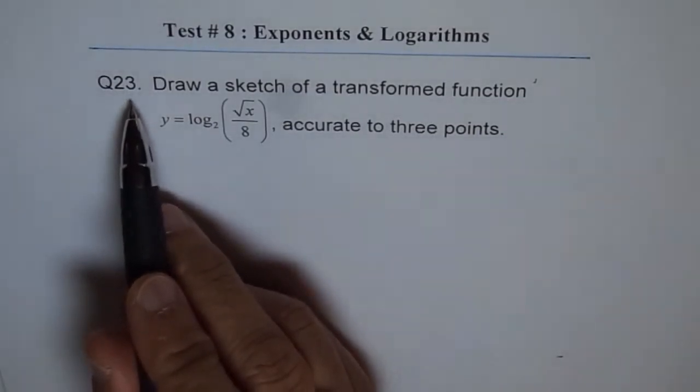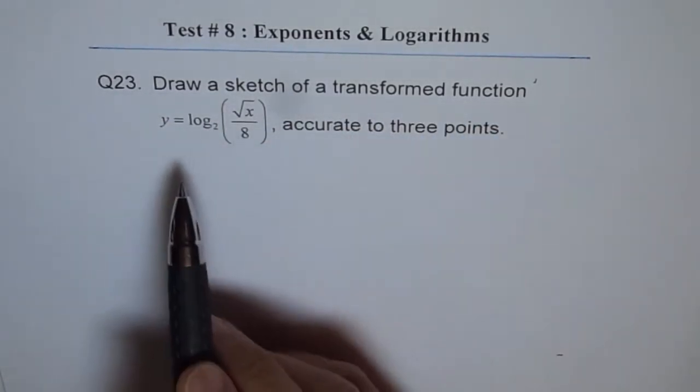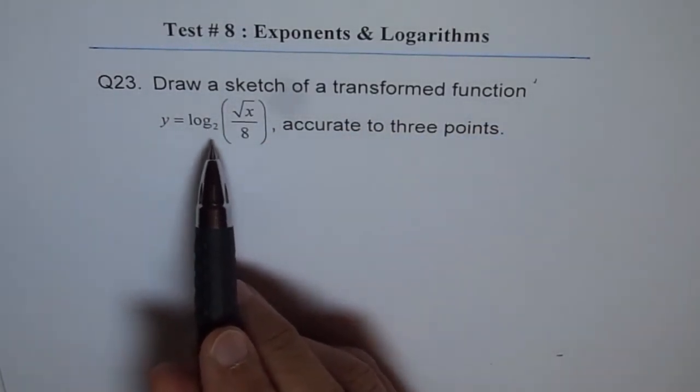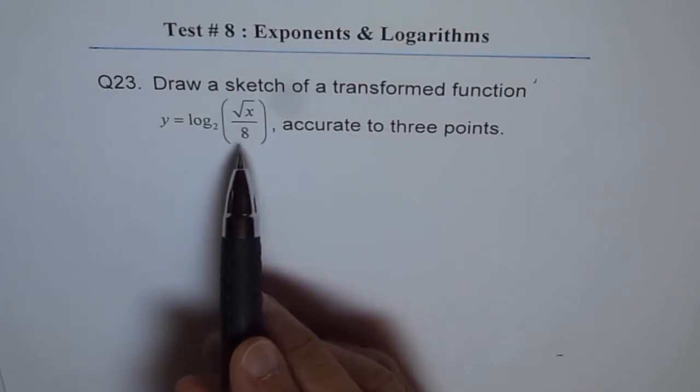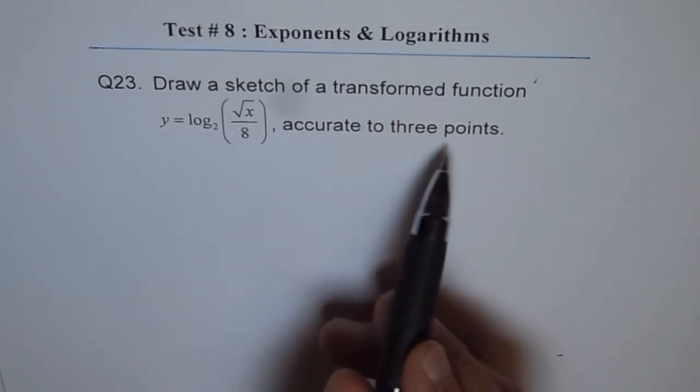Question 23 is: draw a sketch of a transformed function y equals log to the base 2 of square root x divided by 8, accurate to 3 points.